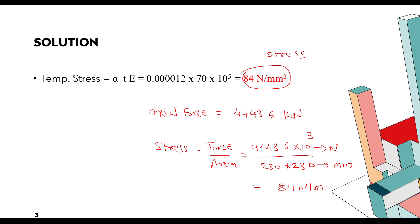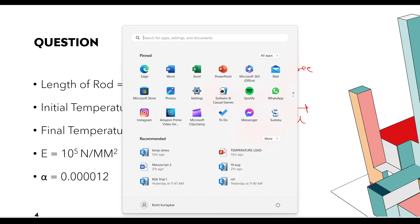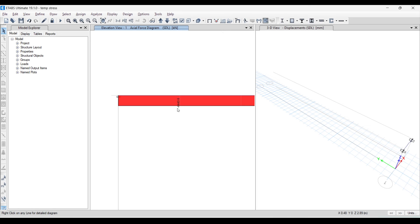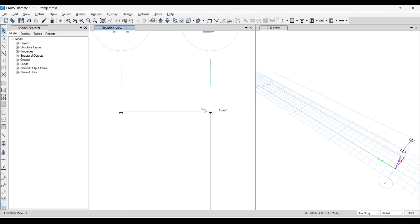We are getting the same result by manual method as well as from the software. Now for the second problem: this is the same beam, but we are keeping one end free and will check the displacement or elongation of the rod due to heating. To model this, unlock the model and remove the support at the free end.